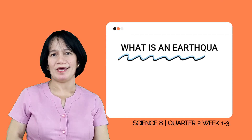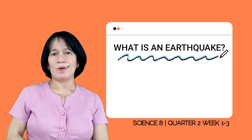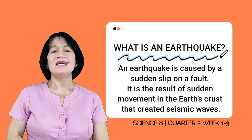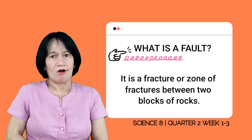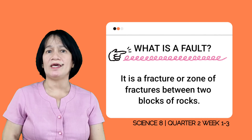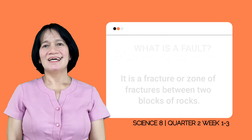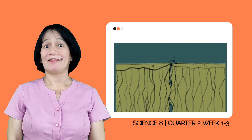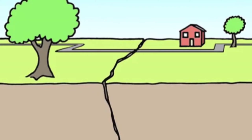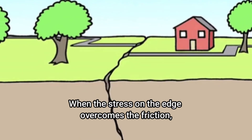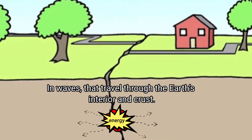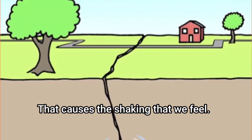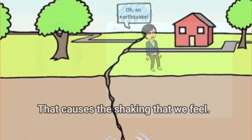Let us define what an earthquake is. An earthquake is caused by a sudden slip on a fault. It is the result of sudden movement in the Earth's crust that creates seismic waves. It is a fracture or series of fractures between two blocks of rock. The tectonic plates are always moving, but they get stuck at their edges due to friction. When the stress on the edge overcomes the friction, there is an earthquake that releases energy in the form of waves that travel through the Earth's interior and crust, causing the shaking.